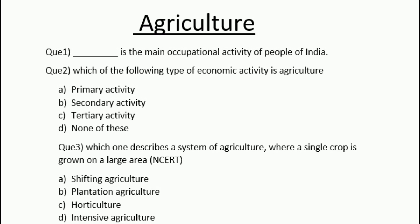The first question is: what is the main occupational activity of people of India? The answer is agriculture — that is the major occupational activity of India.